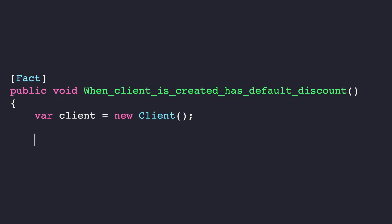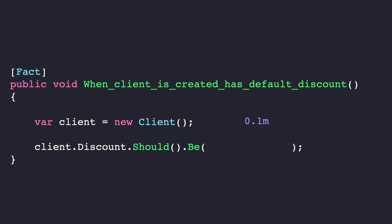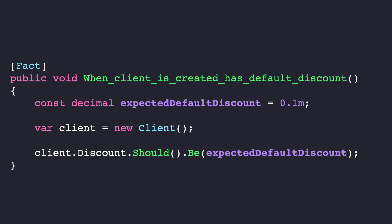Tip number six: use constants for expected values. Extract them to a constant, give them a proper name, and that will extremely improve the readability of your tests.